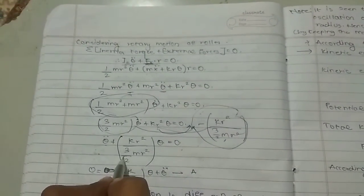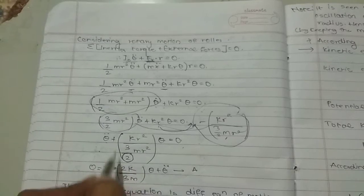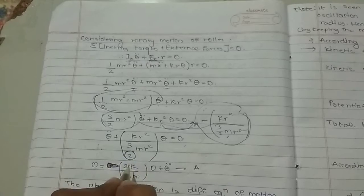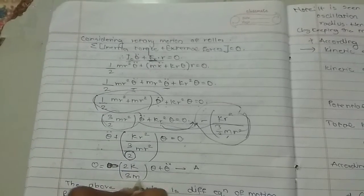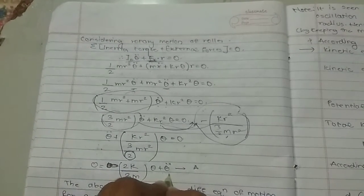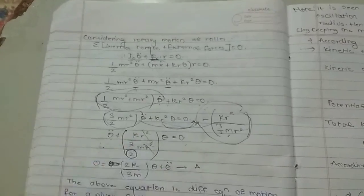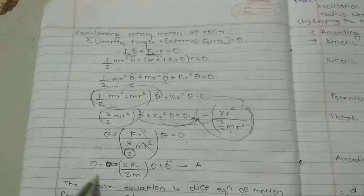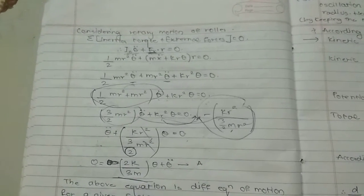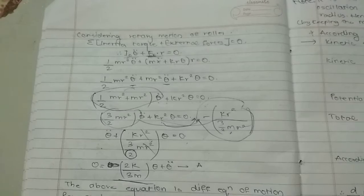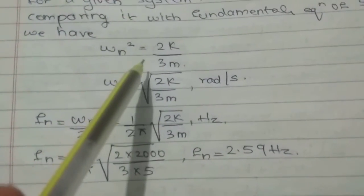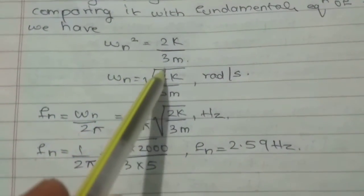Taking the 2 from the denominator of the denominator to the numerator and cancelling r², we have theta-double-dot plus (2k / 3m)*theta equals zero. This is the differential equation of motion for the given system. We compare it with the fundamental equation of SHM, giving omega_n² equals 2k / 3m.